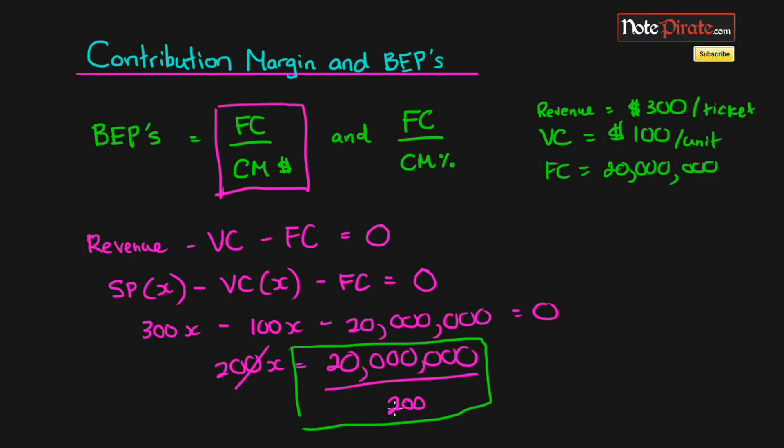And right here is how we get the equation at the top, because this is just fixed costs divided by the contribution margin in dollars. Because the contribution margin is just the selling price per unit, subtract the variable cost per unit. And as we can see, 300 minus 100 is actually $200.